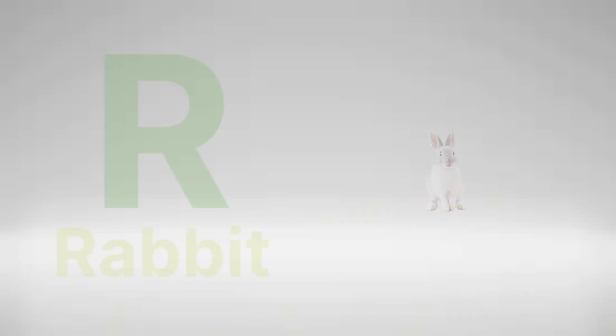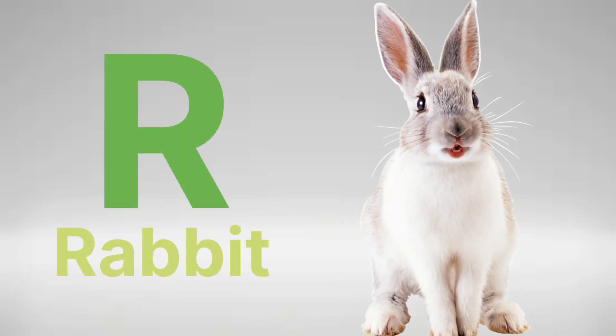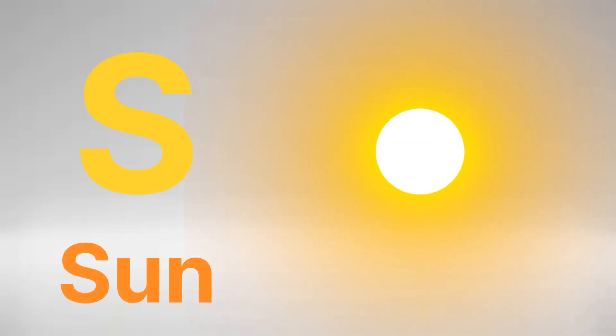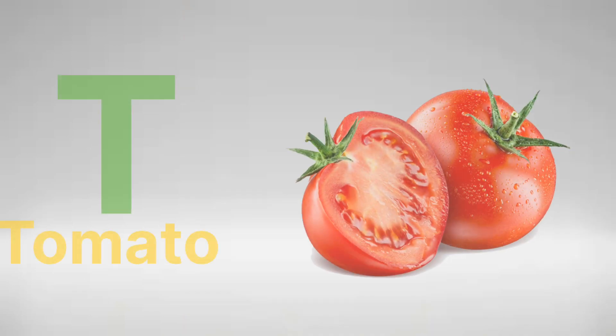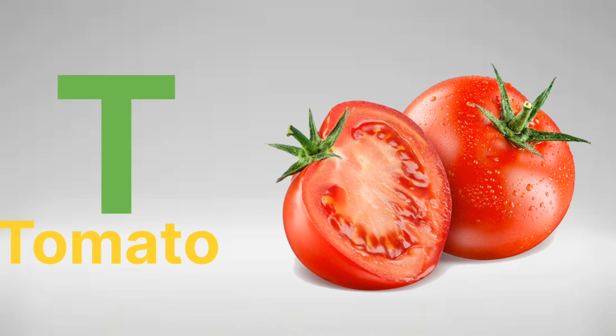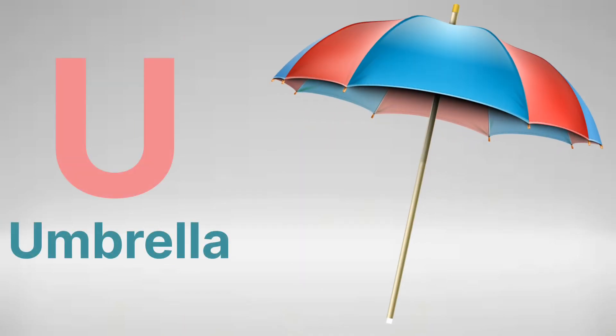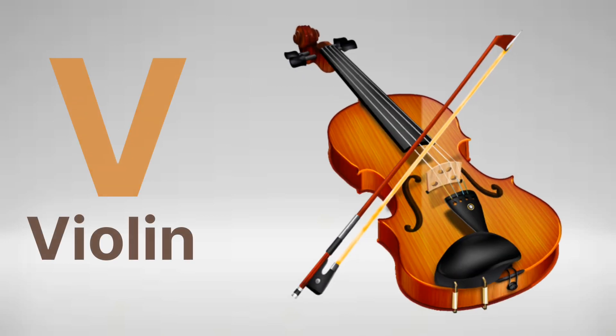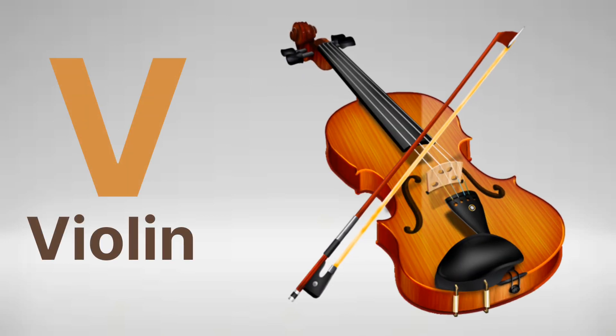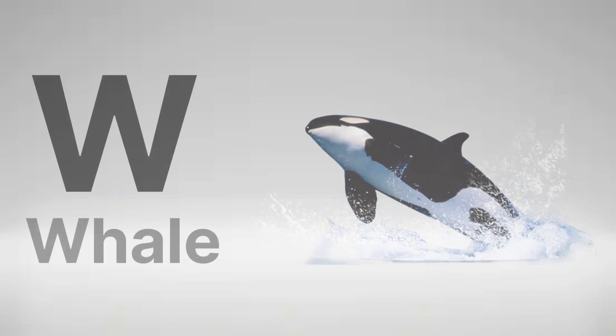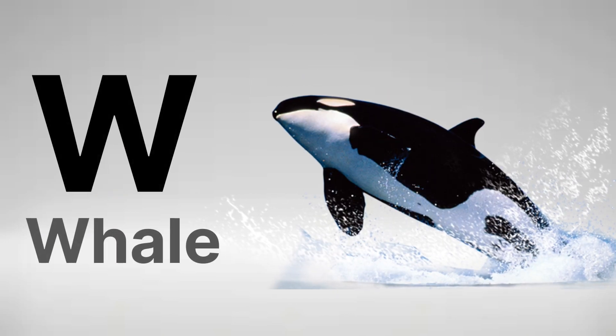R for Rabbit, S for Sun, T for Tomato, U for Umbrella, V for Violin, W for Whale.